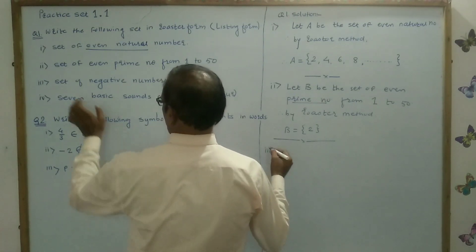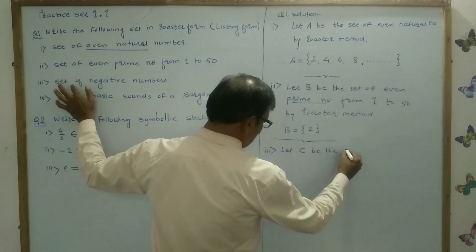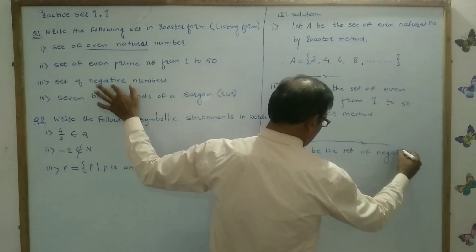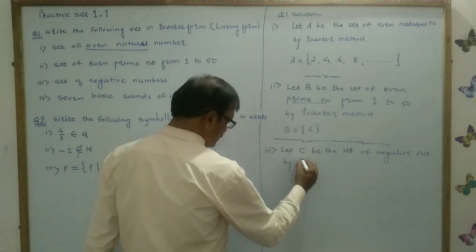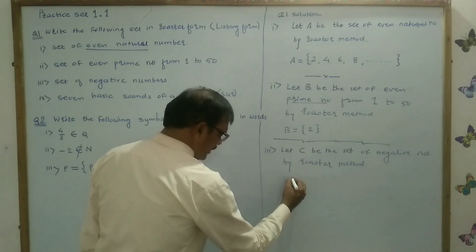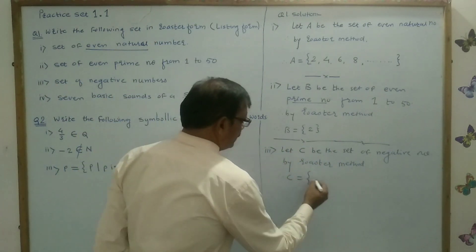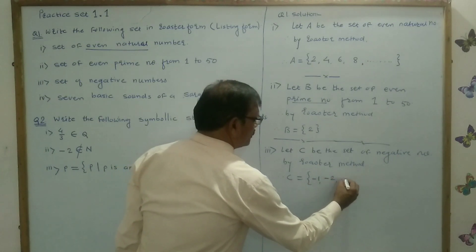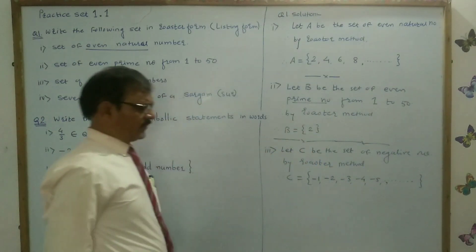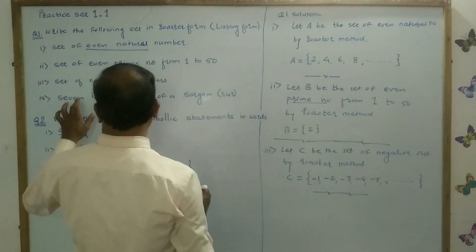Now third: let, in alphabet, set C be the set of negative numbers. Therefore by roster method or roster form, C by roster method or roster form. The set of negative numbers: minus 1, minus 2, minus 3, minus 4, minus 5 and so on. So this is the answer — the negative set of numbers.